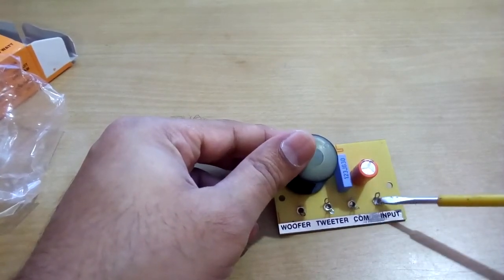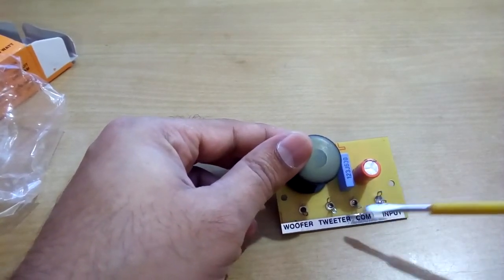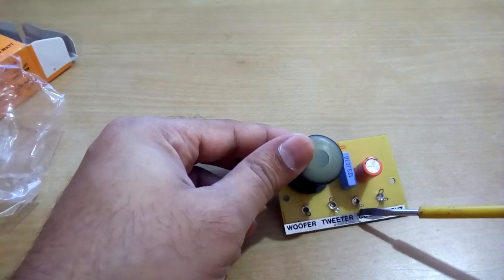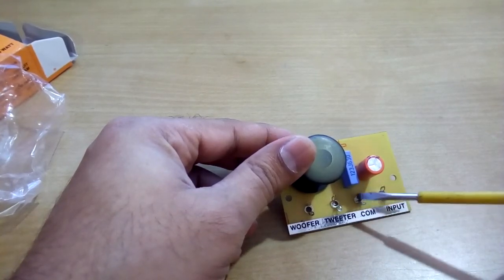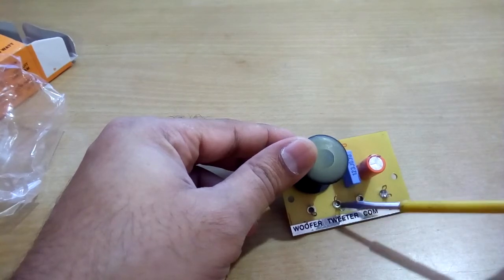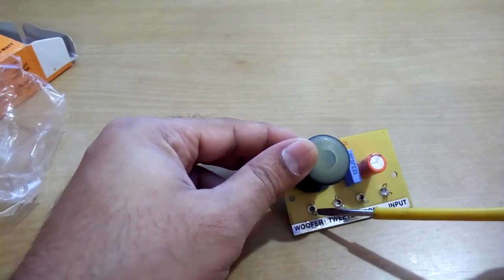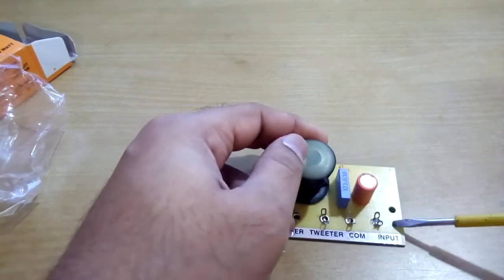These are the connections. This one is for input positive, and this is the common negative or the ground. This is for tweeter and this one is for woofer.